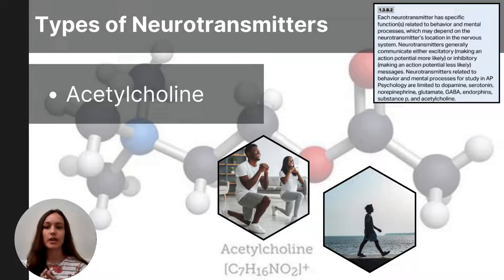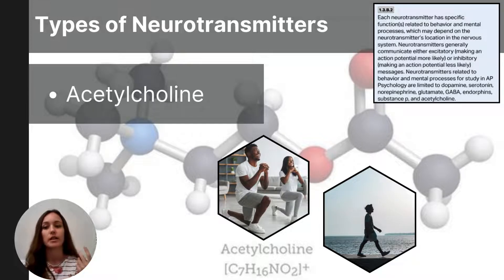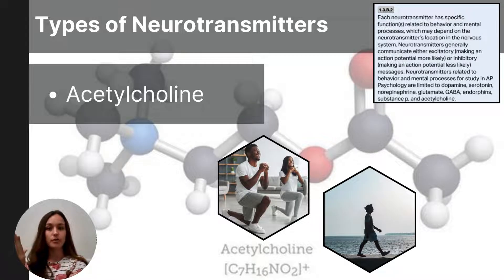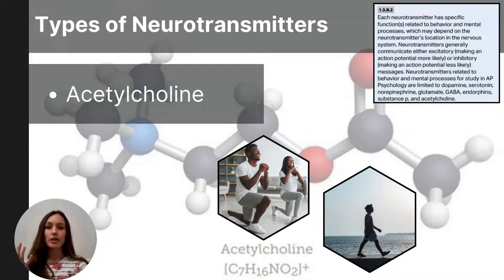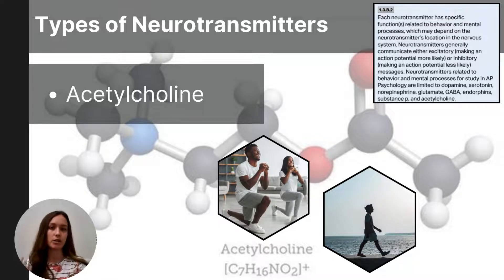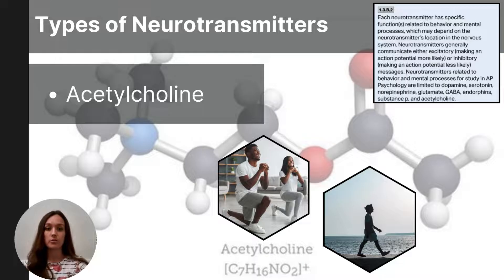Acetylcholine is a neurotransmitter that stimulates muscle contraction by transmitting signals from motor neurons to muscles, and it also plays a role in memory, arousal, and attention. However, because some neurotransmitters have overlapping functions, I typically tell students to focus on glutamate for learning and memory, and acetylcholine for muscle contraction. Too much acetylcholine can cause muscle spasms; too little causes muscle weakness. There are also significant memory issues related to acetylcholine deficiency, most notably Alzheimer's disease.